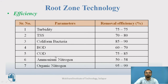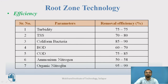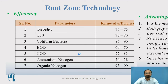COD removal efficiency is 75 to 85 percent. Ammonium nitrogen removal efficiency is 50 to 58 percent. Organic nitrogen has the highest removal efficiency at 95 to 99 percent.